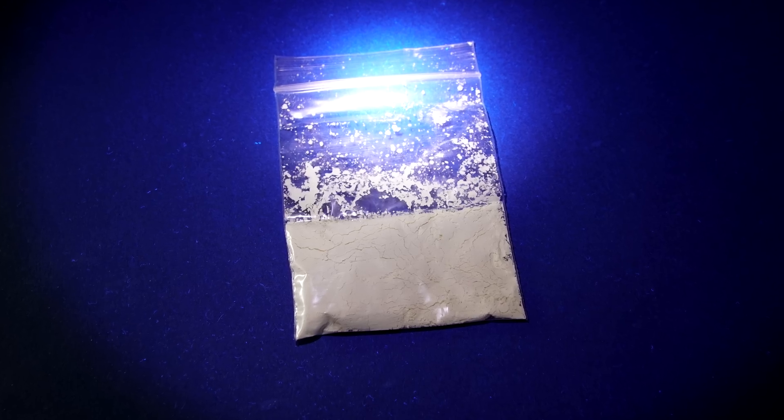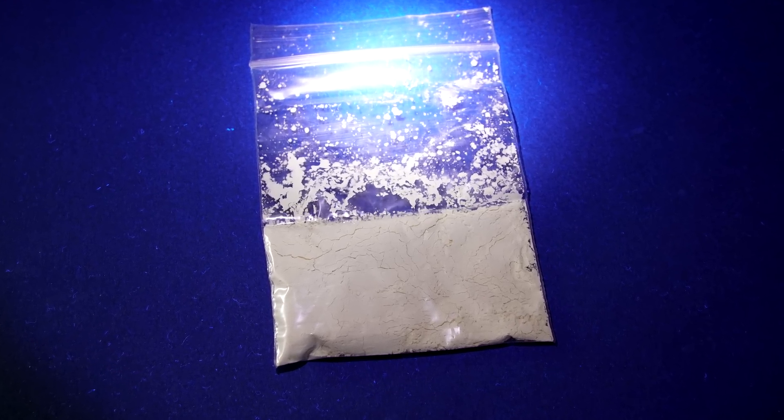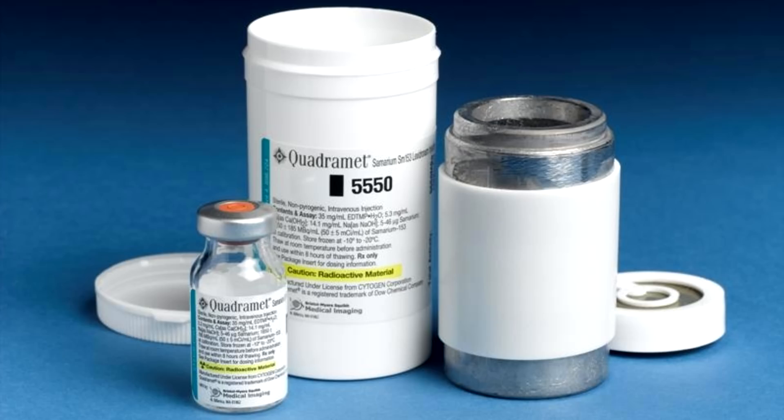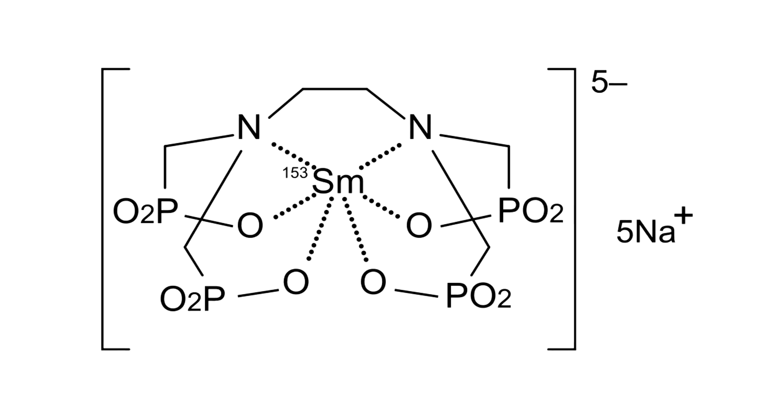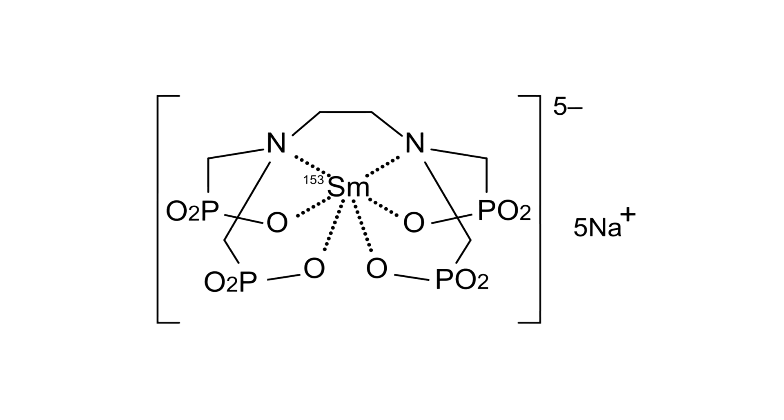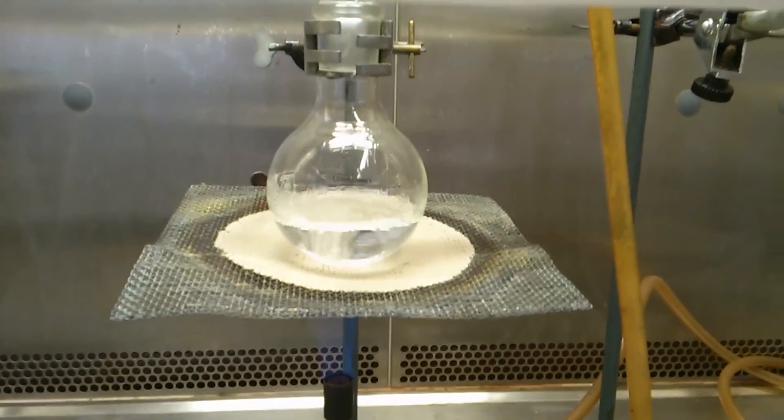Samarium oxide itself under ultraviolet light glows with a slight yellow color. Today, samarium compounds have many uses. For example, the quadramet drug, which is a samarium complex and is used to treat cancer tumors.